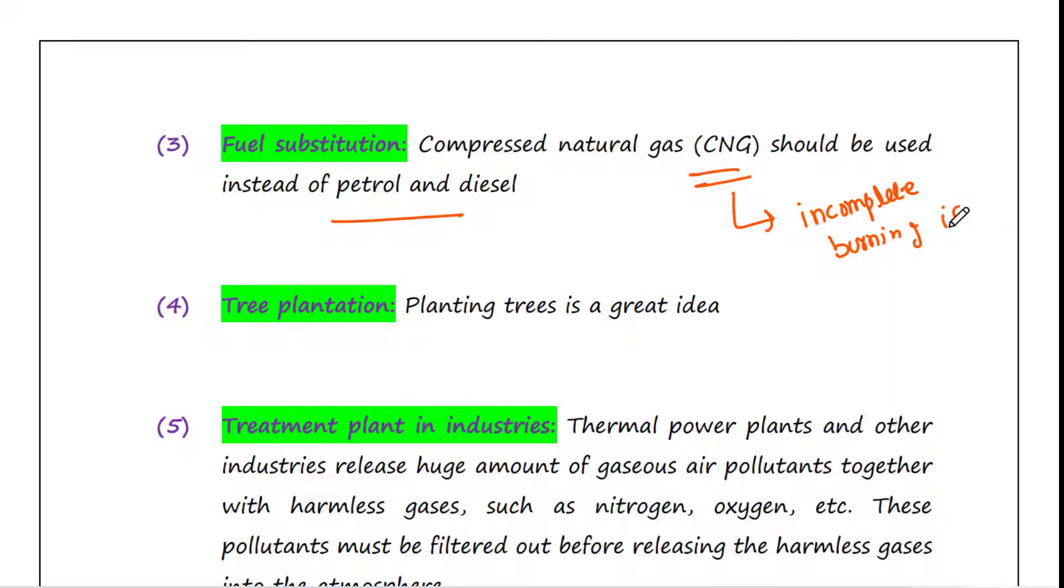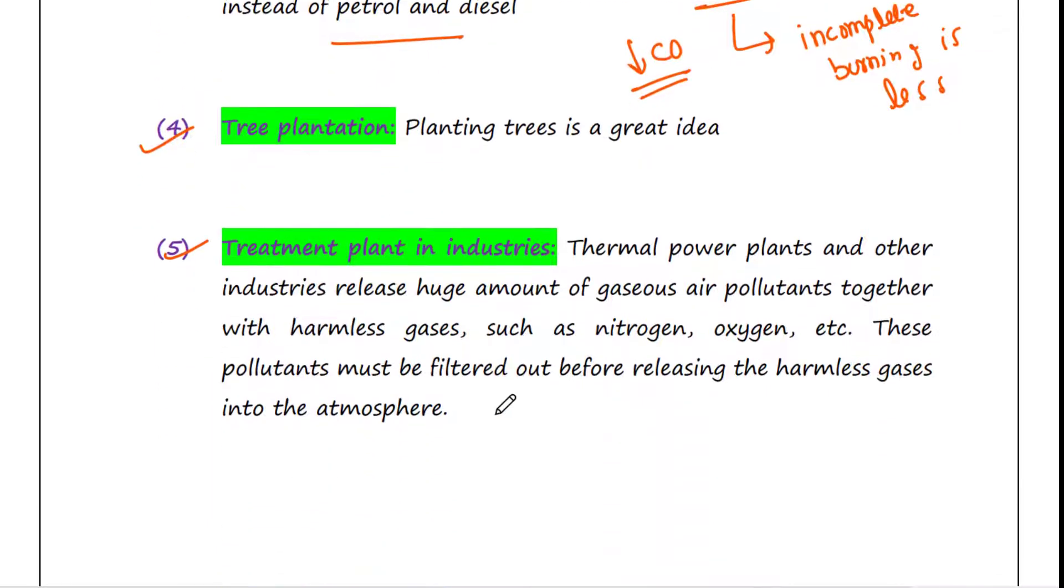Next is tree plantation. Planting trees is a great idea to reduce air pollution. Next is treatment plant in industries. Thermal power plants and other industries release huge amounts of gaseous air pollutants together with harmless gases such as nitrogen, oxygen, etc. These pollutants must be filtered out before releasing the harmless gases into the atmosphere.